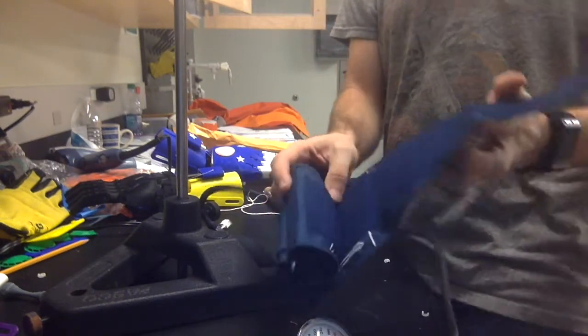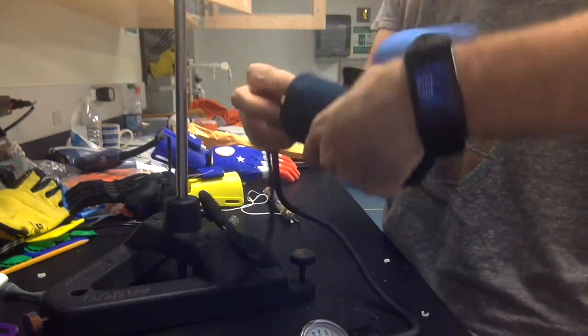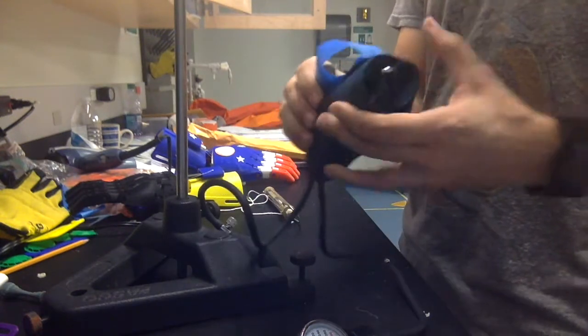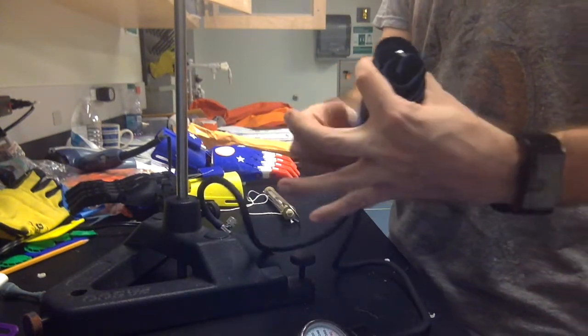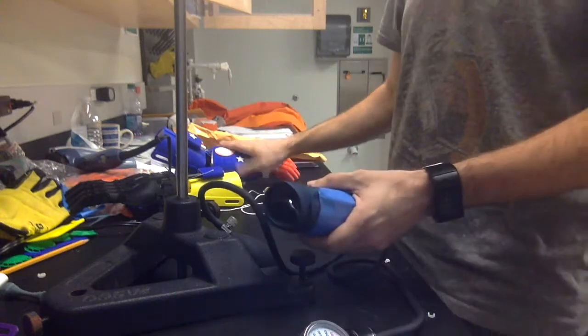So it's very simple. Anybody can do this if you have a blood pressure cuff, and you can get an idea of what kind of grip strength you're getting out of your e-nable devices.